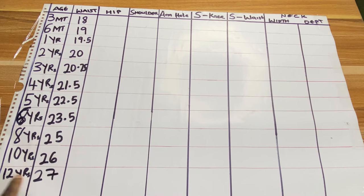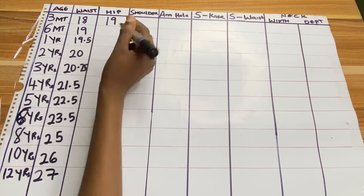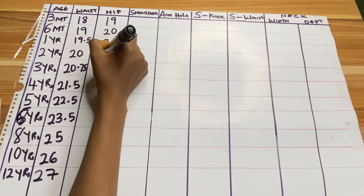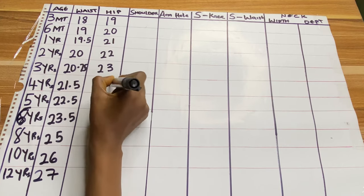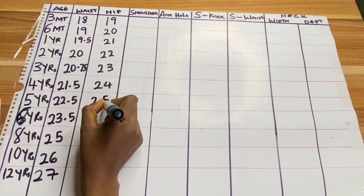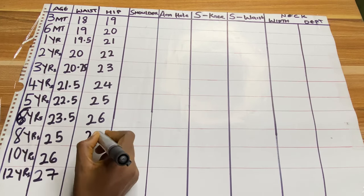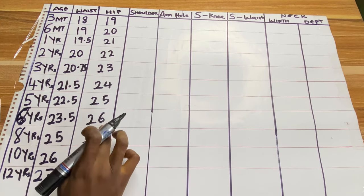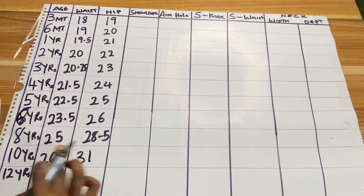So that's the standard waist measurement for these different age groups. The next measurement is hip. For three months 19 inches, six months 20 inches, one year 21 inches, two years 22 inches, three years 23 inches, four years 24 inches, five years 25 inches, six years 26 inches, eight years 28.5 inches, ten years 31 inches, and twelve years 33 inches.